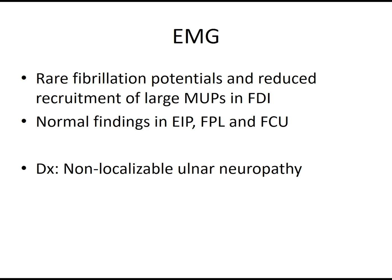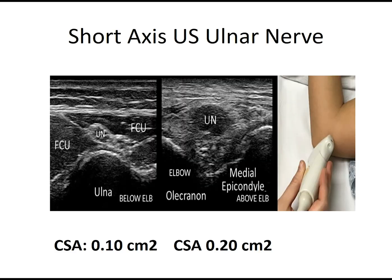So the EMG diagnosis was a non-localizable ulnar neuropathy, hence we elected to perform ultrasound. On the left here you can see the ulnar nerve sitting beneath the aponeurosis that forms between the two heads of the flexor carpi ulnaris muscles.